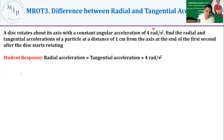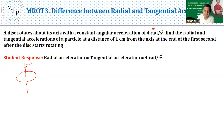Alpha is given to you. The disc rotates about its axis. Find the radial and tangential acceleration of a particle at a distance of one centimeter from the axis at the end of the first second. Two parameters are given: r = 1 cm and t = 1 s. Since the disc starts from rest, initial angular velocity ω_i = 0.